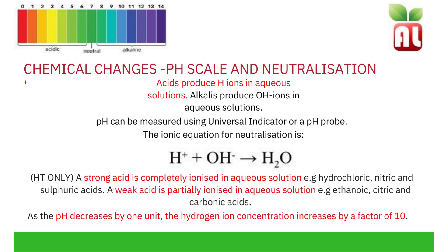A strong acid is completely ionized in aqueous solution. For example, hydrochloric, nitric, and sulfuric acids are strong acids. Strong acids have a pH between 0 and 3. A weak acid is partially ionized in aqueous solution, meaning not all of the H⁺ ions in the acid are dissociated from the rest of the compound. Examples include ethanoic, citric, and carbonic acids. Weak acids typically have a pH between 4 and 6.